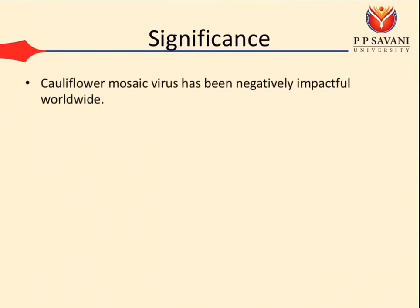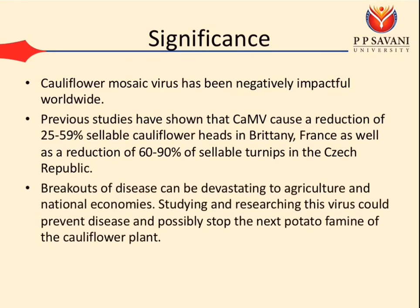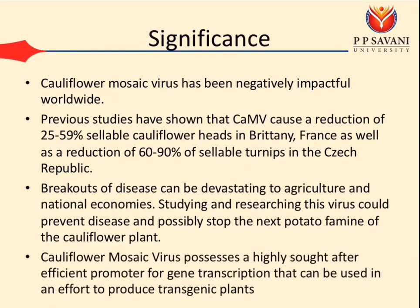Regarding significance, Cauliflower Mosaic Virus has been negatively impactful worldwide. Previous studies have shown that CaMV causes a reduction of 25–59% of cauliflower yield in Brittany, France, as well as a reduction of 60–90% of turnips in the Czech Republic. Outbreaks of disease can be devastating to agriculture and national economics. Studying this virus could prevent disease and possibly stop the next potato famine of the cauliflower plant. CaMV possesses a highly sought-after efficient promoter for gene transcription that can be used to produce transgenic plants.